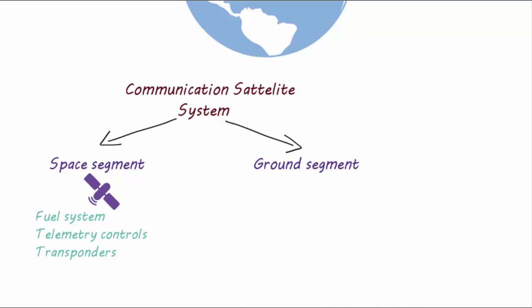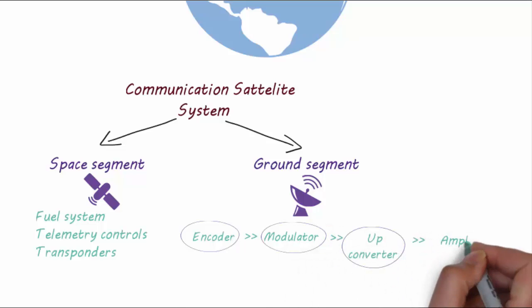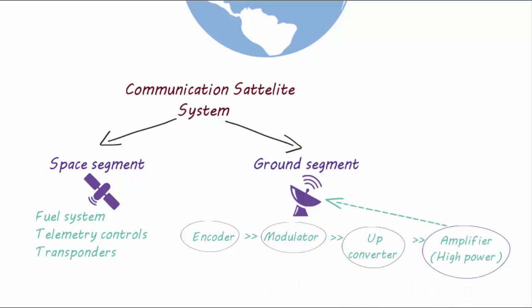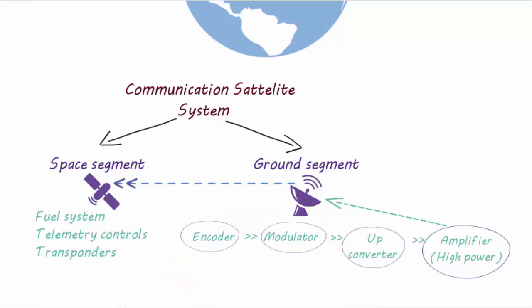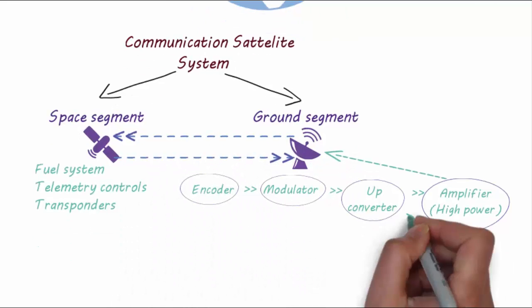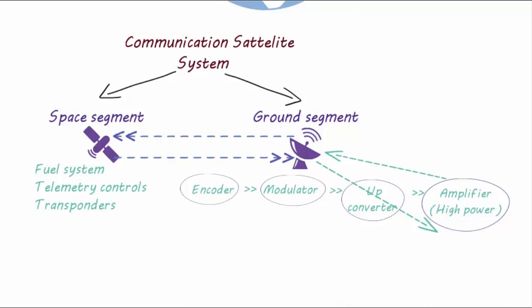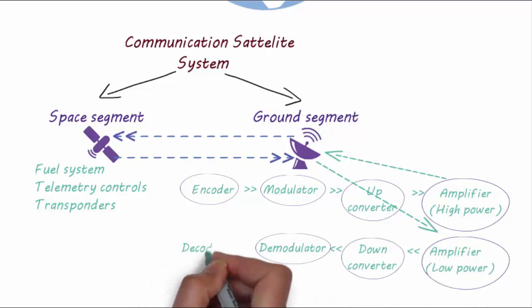The ground segment consists of earth station where a baseband signal is first encoded and then passed through a modulator, then upconverter, then amplified by a high power amplifier, and this amplified signal is then sent to the antenna which transmits it towards the space station. When the space station sends back the signal, the receiving station works in reverse direction. It is passed through the low power amplifier, then downconverted, then demodulated, and finally decoded to the baseband signal.